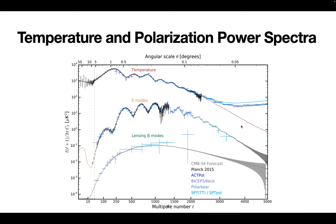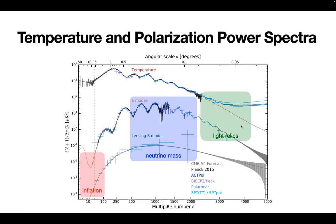If you were to pick a few science goals that really motivate upcoming big experiments, they would be: inflation — you can learn about inflation by looking for B-modes on degree-scale angular scales on the sky; neutrino masses — by measuring the acoustic peaks in polarization very precisely, since neutrino masses affect the position of those peaks and create correlations between different angular multipoles; and new light particles — light thermal relics that froze out early on, which affect the small-scale damping tail of the CMB.